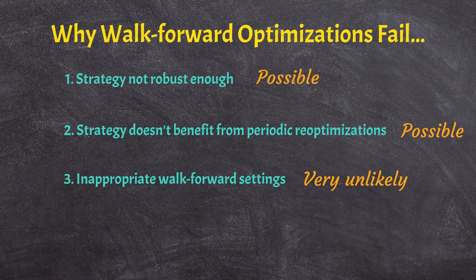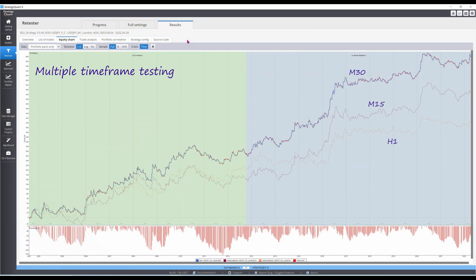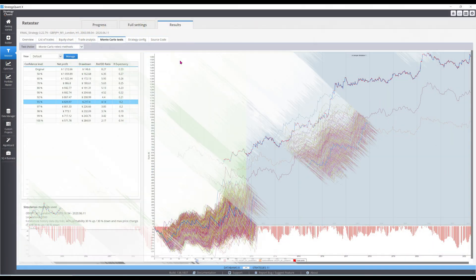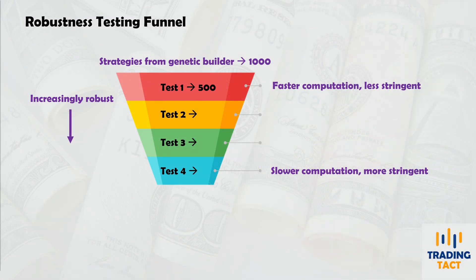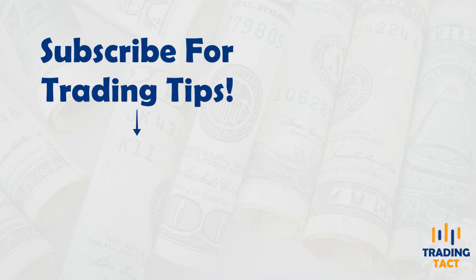With these test results, I certainly wouldn't rush to trade the strategy. I'd run other robustness tests like multiple timeframe testing or use Monte Carlo simulations to randomize the price data — I'll link these guides at the end of the video. The vast majority of your strategies should and will fail robustness testing. Fortunately, since you can efficiently generate hundreds if not thousands of strategies, arriving at a final basket of 10 to 20 robust strategies is very much doable. Thanks for watching, and do subscribe if you want more honest trading content.